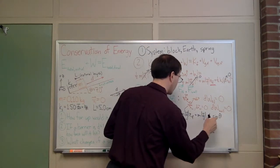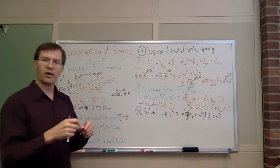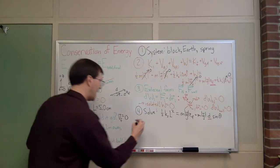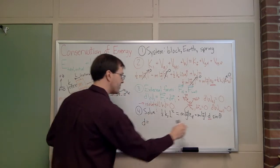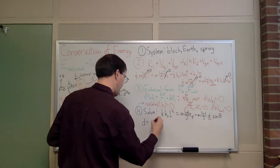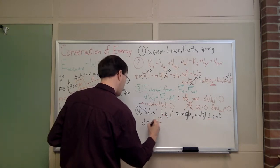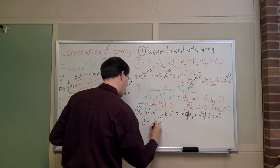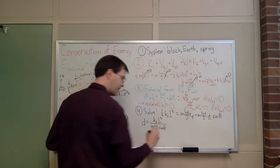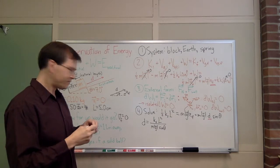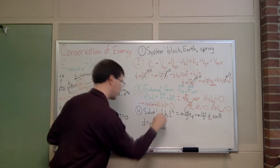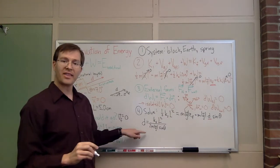That's equal to m times the magnitude of g times d sine of theta. And here, my ultimate unknown here is that d over there. So I can solve. I can find that answer. Solving for d, I get that d equals k spring l squared over 2 times m magnitude of g sine of theta. That's what I come up with for this. And at this point it's an answer. I can plug in numbers.